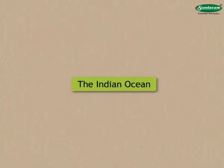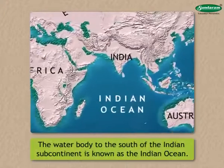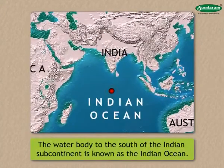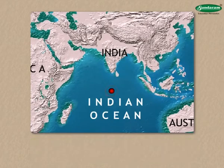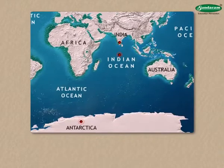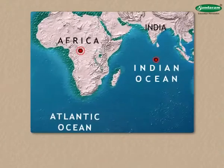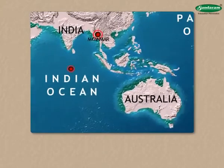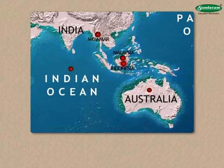The water body to the south of the Indian subcontinent is known as the Indian Ocean. It has been named after our country. This ocean extends from the southern coast of India up to the continent of Antarctica. The continent of Africa lies to the west of the Indian Ocean, and Myanmar, Malaysia, the Indonesian Islands and the continent of Australia are to its east.